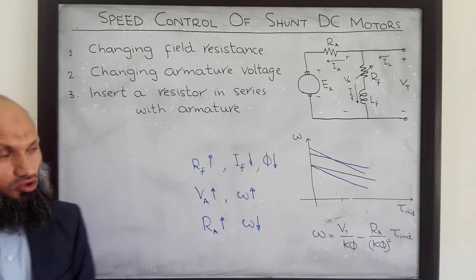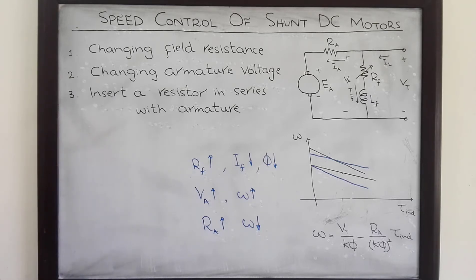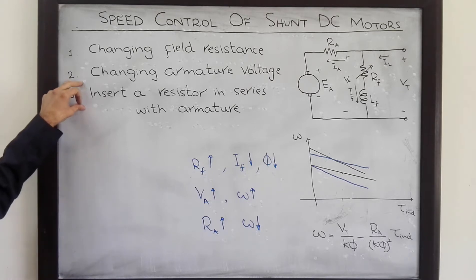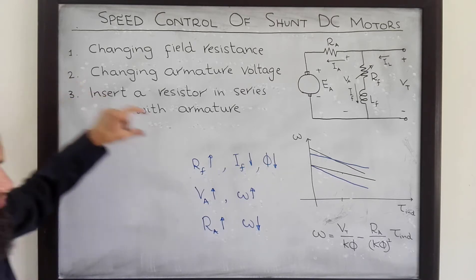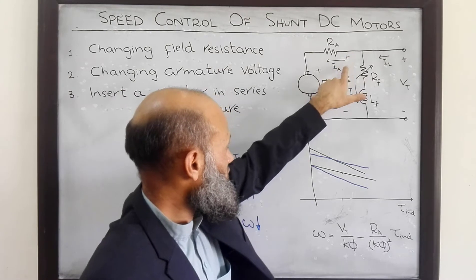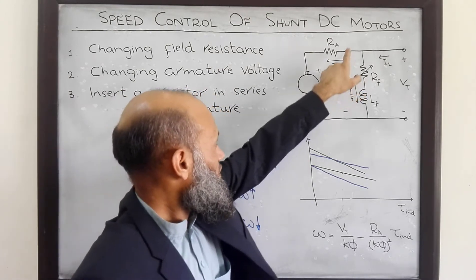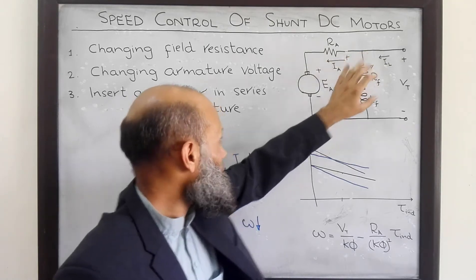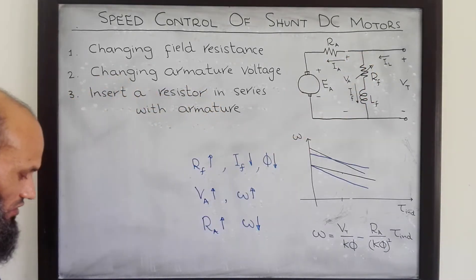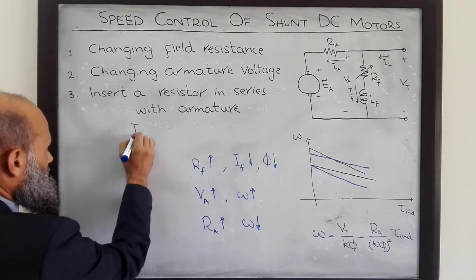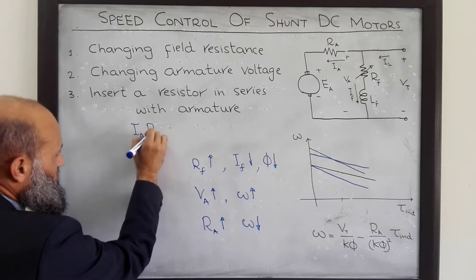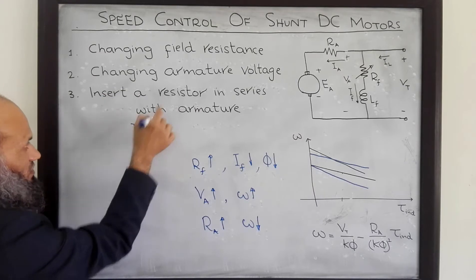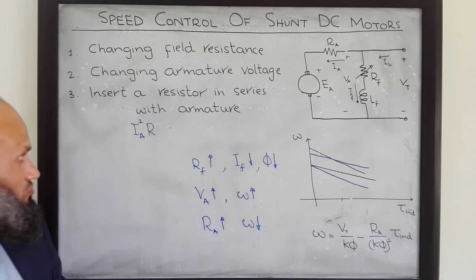Let's talk about the pros and cons of all these approaches. The armature resistance approach is not used very frequently because there is high armature current, and inserting a resistor there is associated with power losses in the additionally inserted resistor. That is why this approach is not very frequently used.